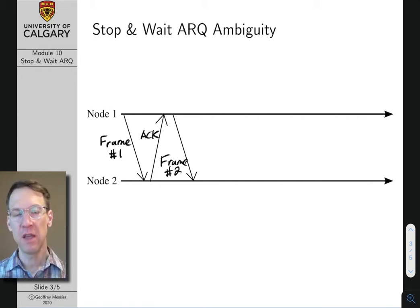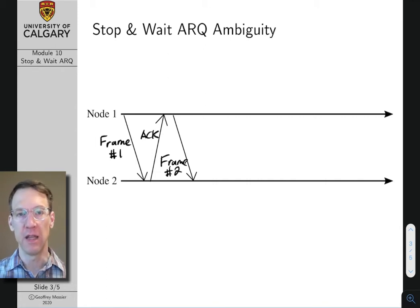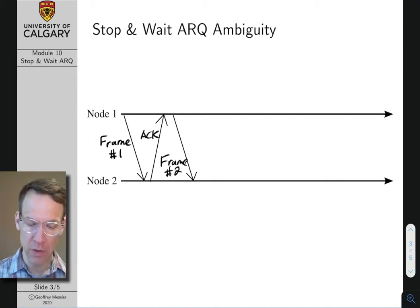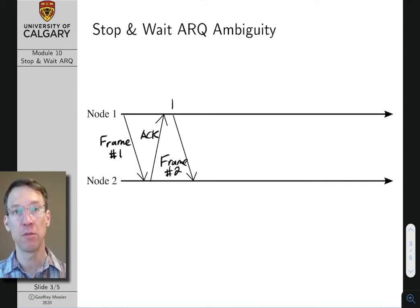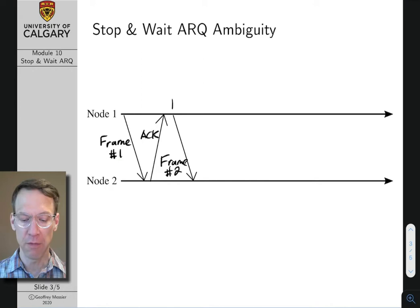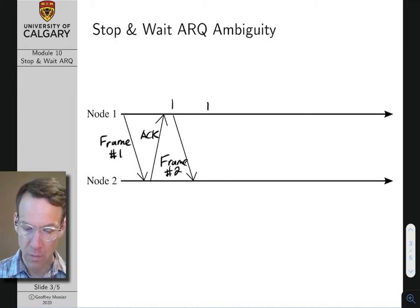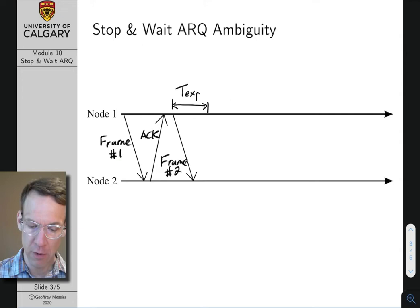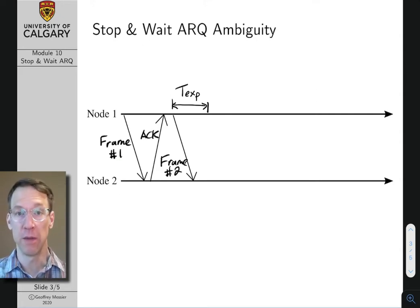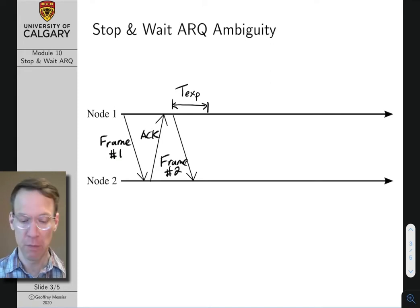We're going to send frame number two. Frame number two arrives successfully, but let's say the receiver is not ready to send the acknowledgement back immediately — maybe the processor managing the ARQ protocol is also responsible for other tasks that have pre-empted the processing of the received frame. With all ARQ protocols, the transmitter starts a timer after sending the frame, and if the timer expires before receiving the acknowledgement, the frame is simply retransmitted. Let's say the timer expiry occurs before the ACK is received.